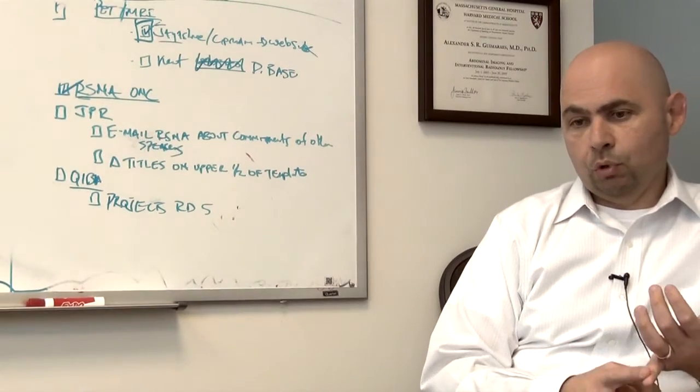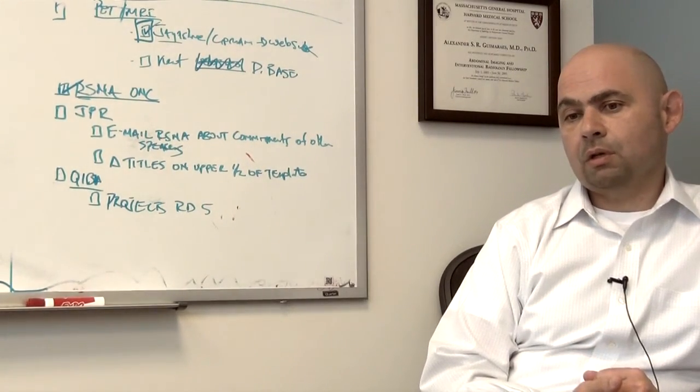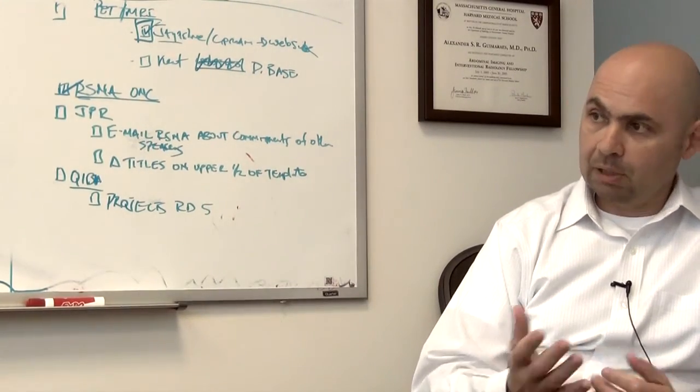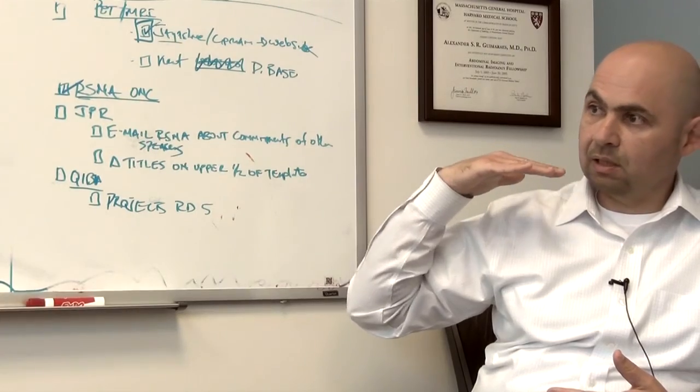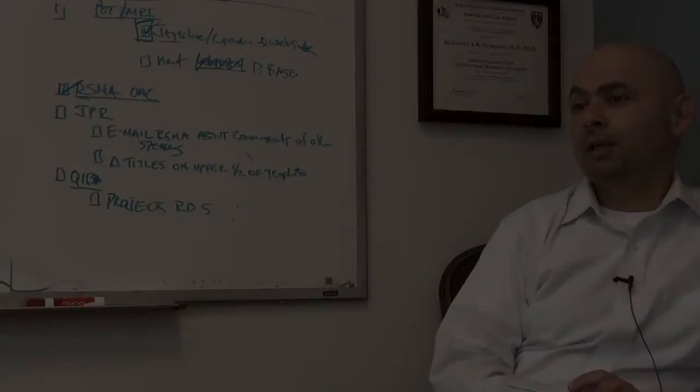So you have motion artifact, you have flow artifacts that occur as a result of pulsating flow within vessels. You can limit that by saturating the spins that are in the flowing vessels above and below the region of interest.